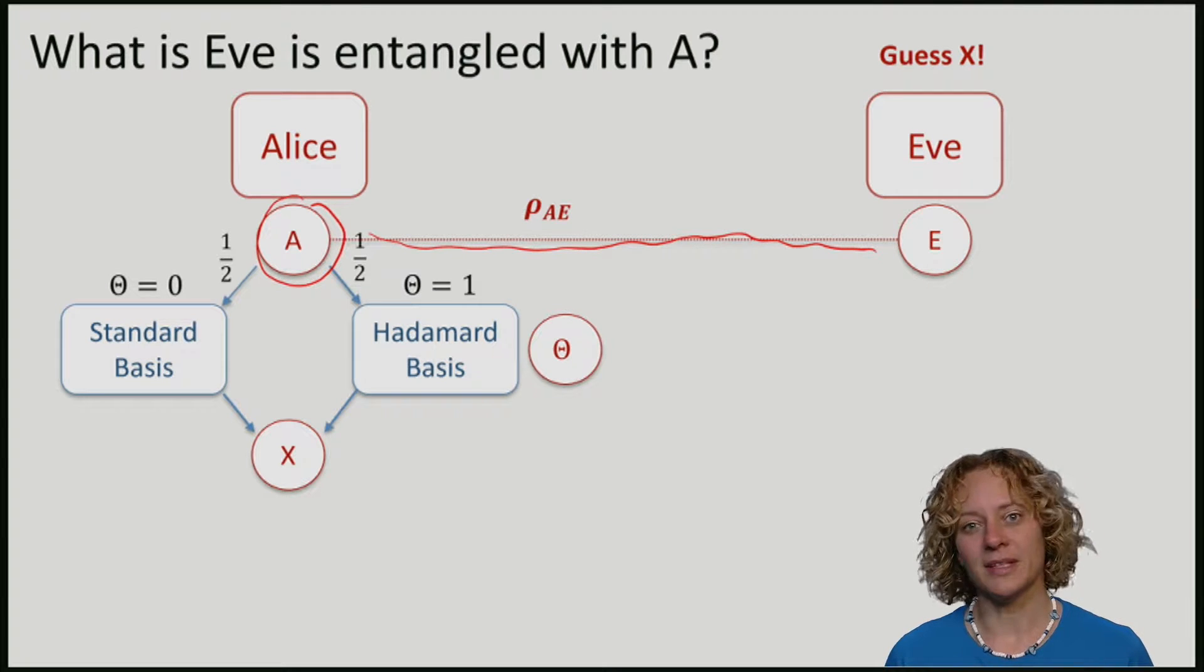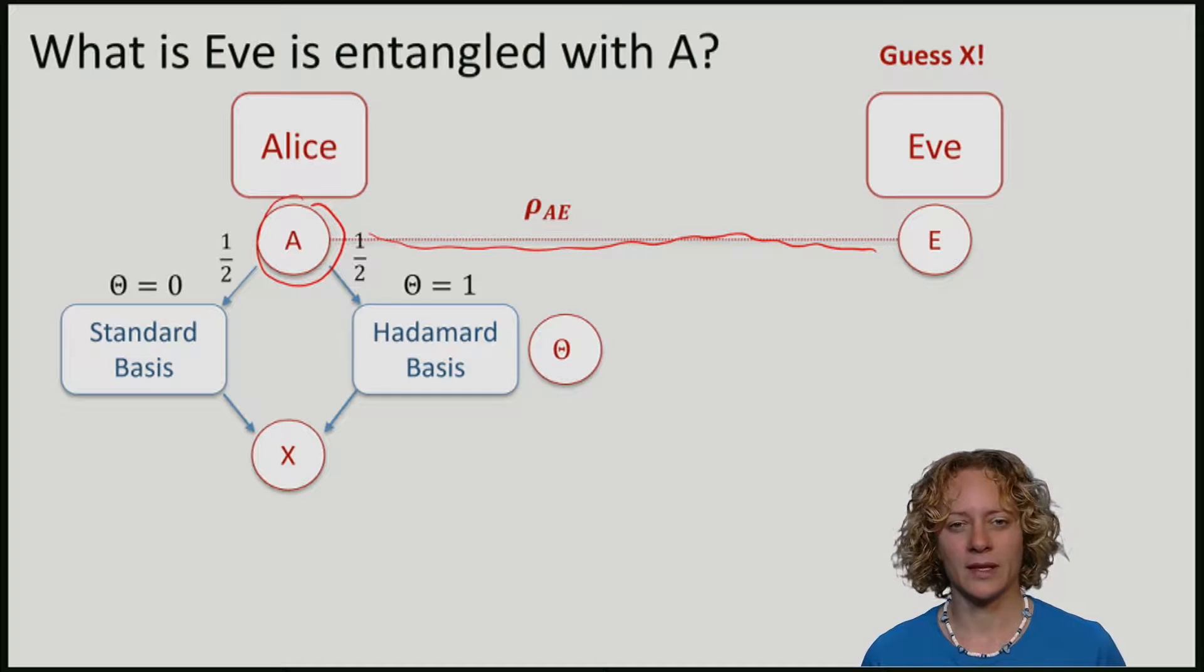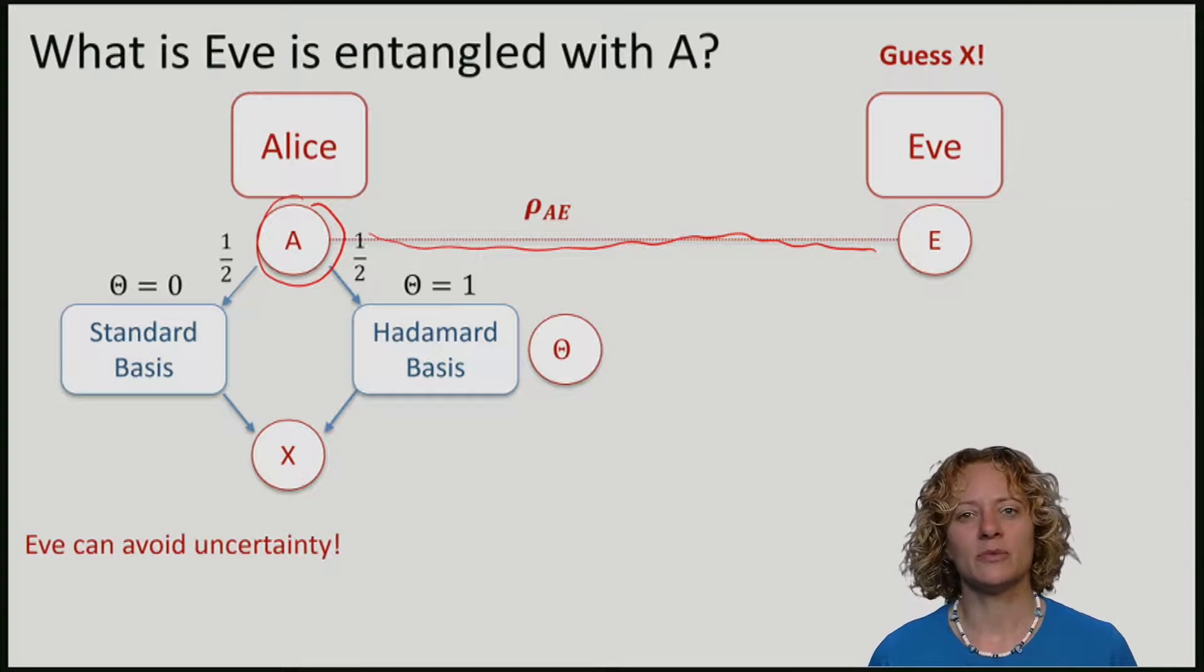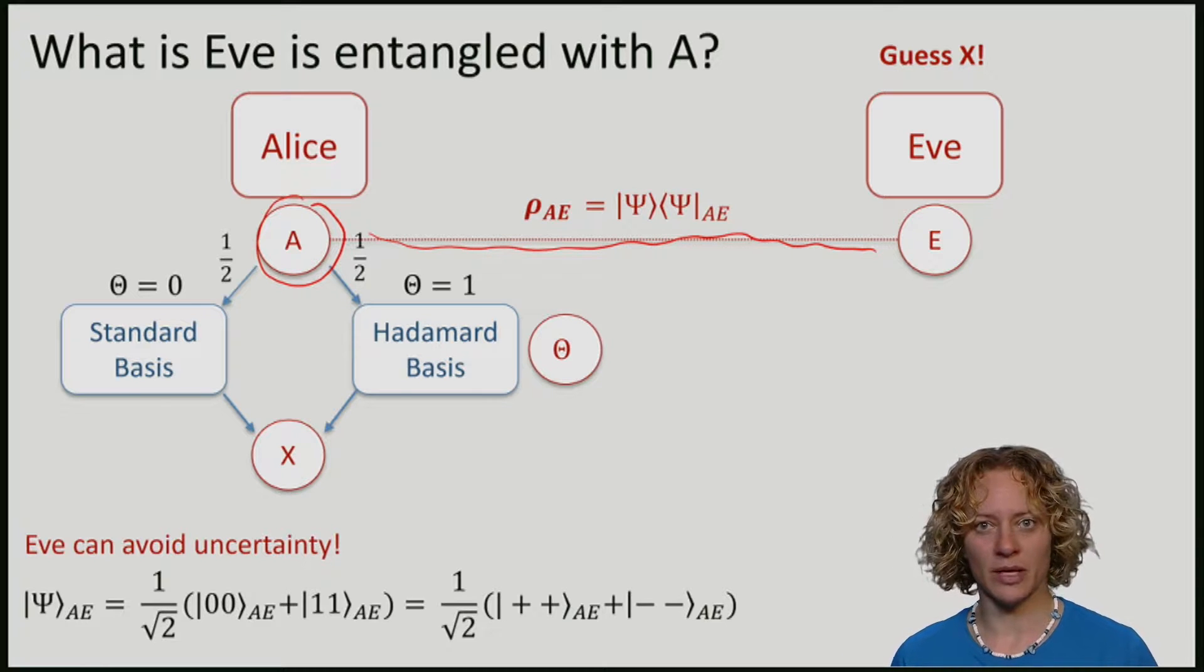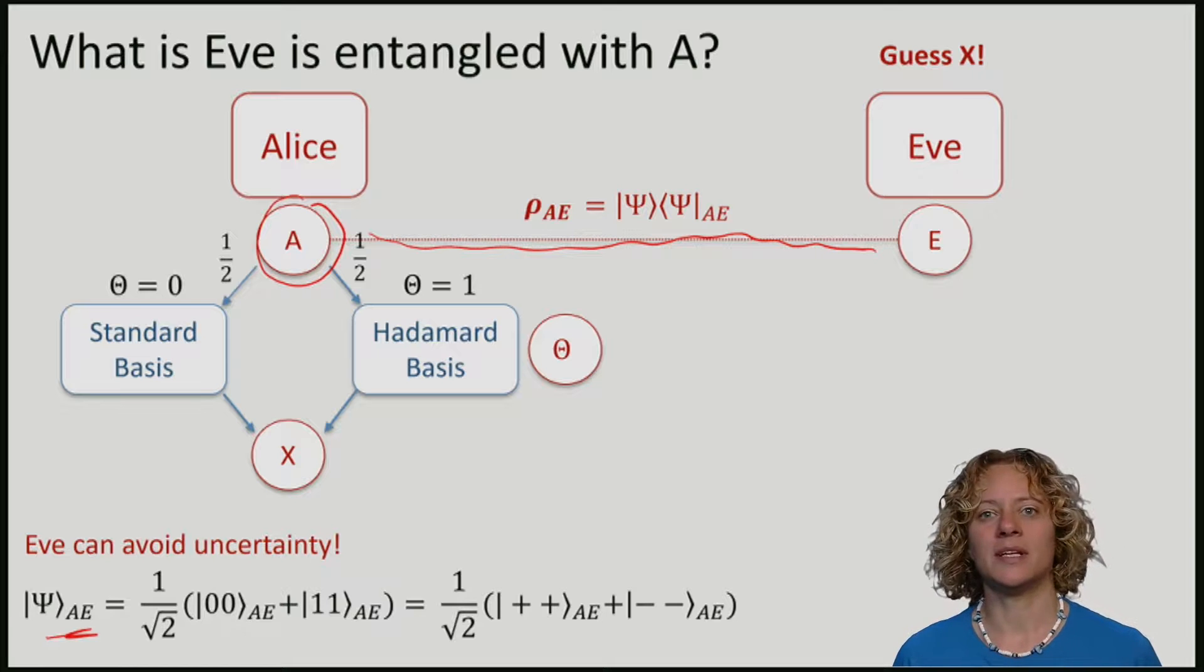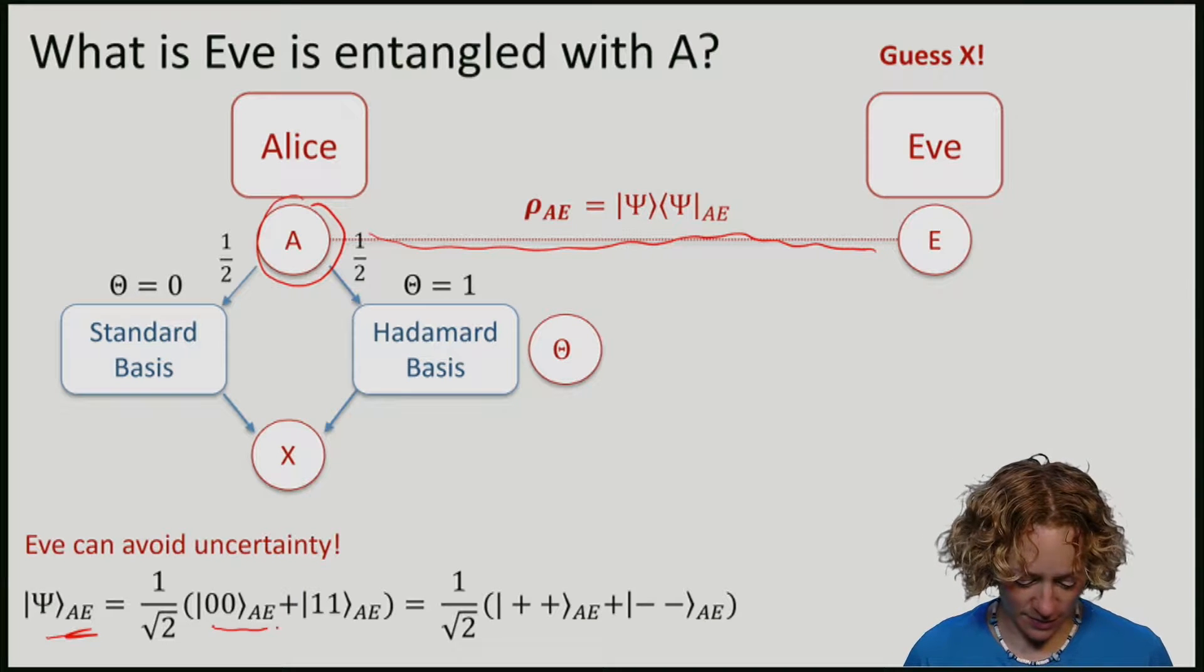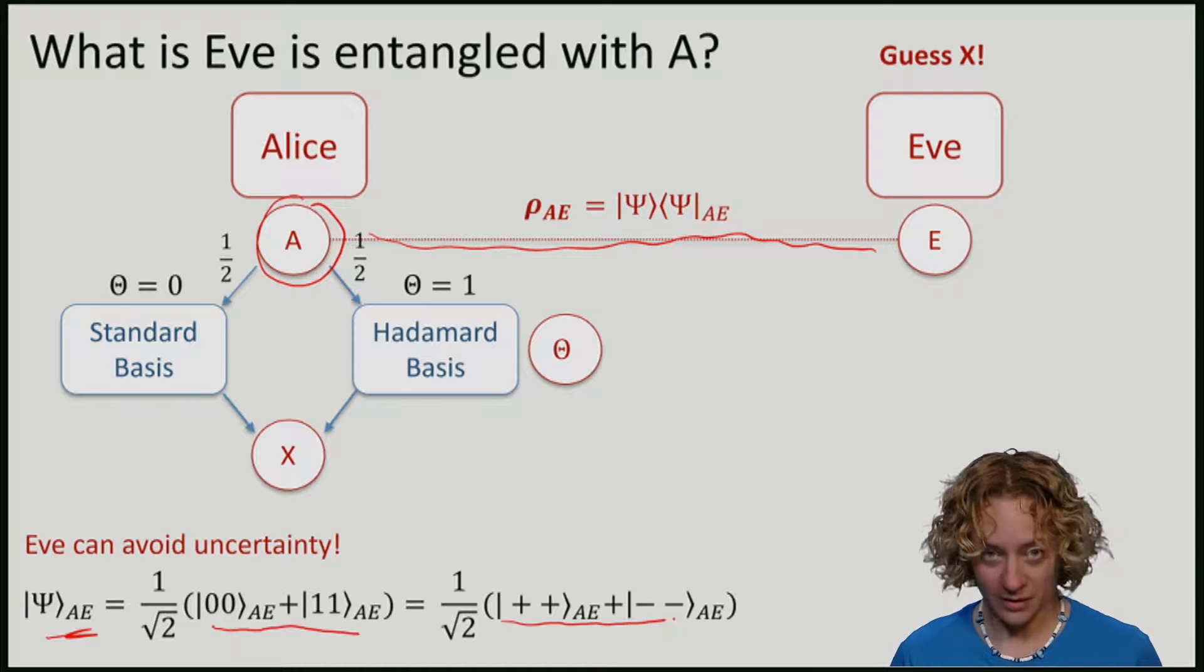It turns out that in this case Eve could avoid uncertainty. In particular, if we imagine that the state shared between Alice and Eve is the following, namely it's just the EPR pair, you can see that because we can write the EPR pair both in terms of the standard basis and in terms of the Hadamard basis.